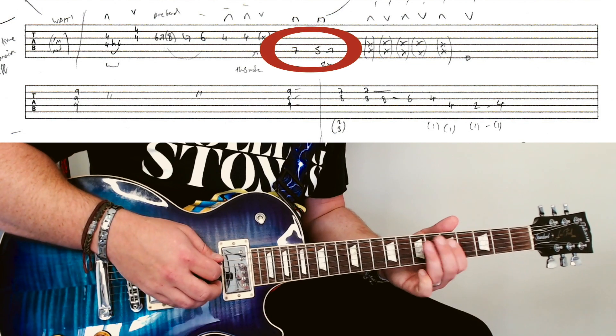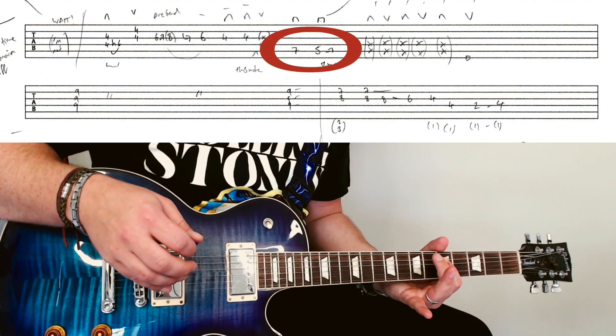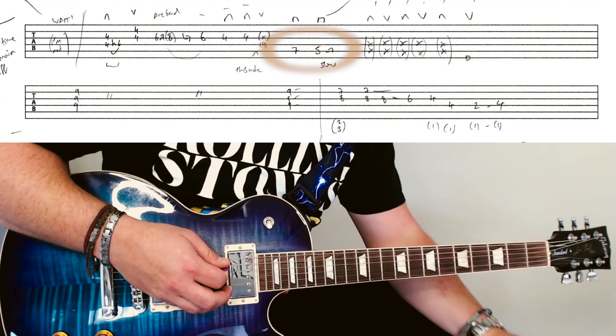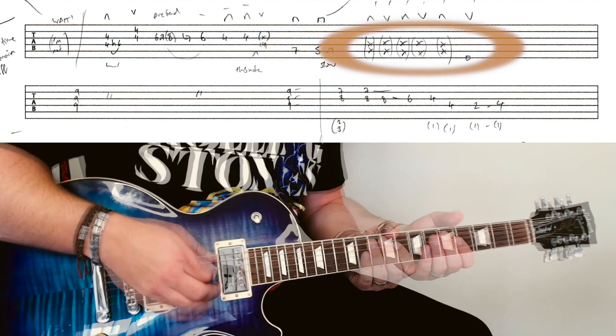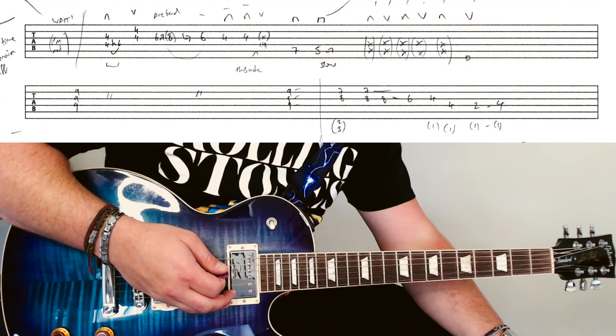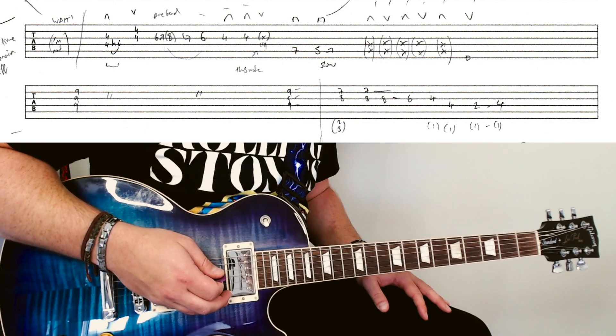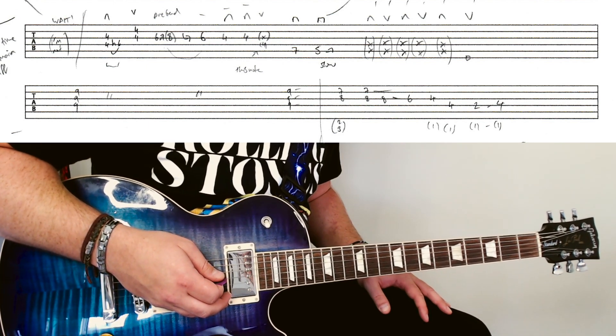Then this seventh jump up with the third finger, obviously, and then slow bend on that fifth. That's how that little bit's done there. Listen carefully to the record and play along with it, you'll find that makes it a little bit easier.